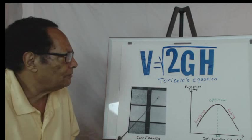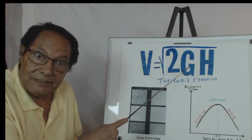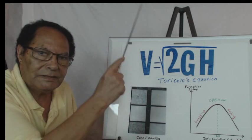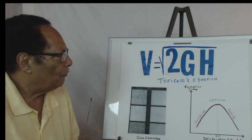V is the velocity of the jet. G is acceleration due to gravity. If you are familiar with that, H is the height.